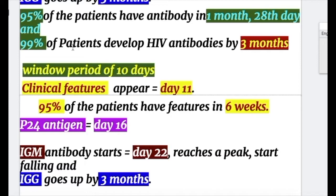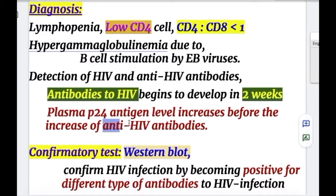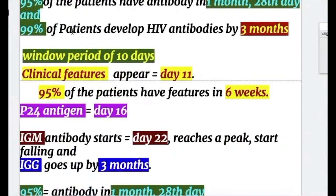95% of patients have antibodies by 1 month and 99% by 3 months. Plasma P24 antigen level increases before the rise in anti-HIV antibodies, so plasma P24 is the first marker to increase.